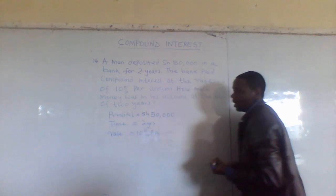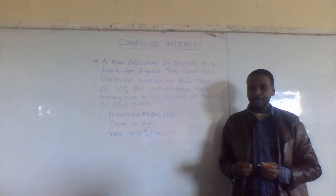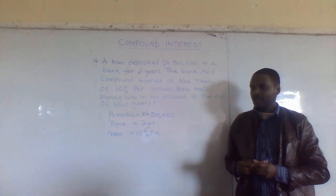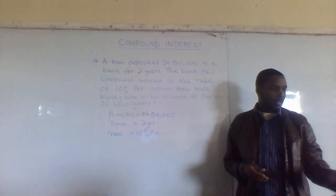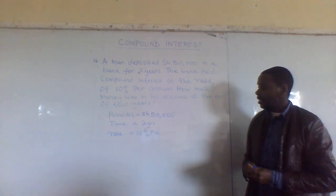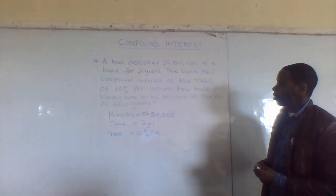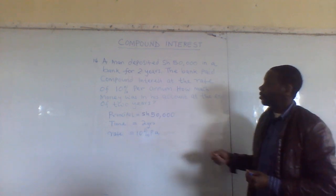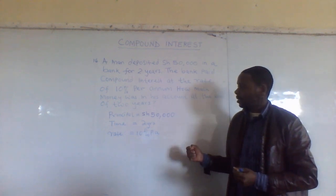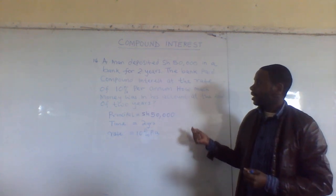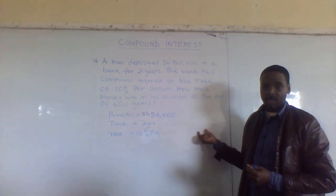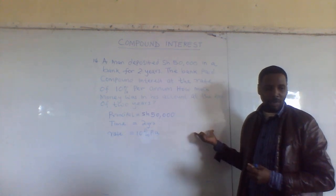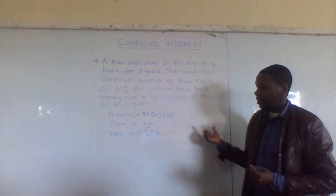What does per annum mean? Per annum means per year. So when you're working on compound interest, we work out every year separately.